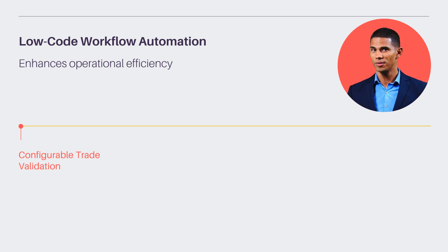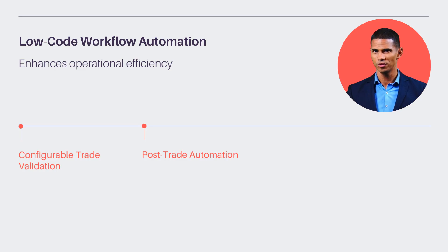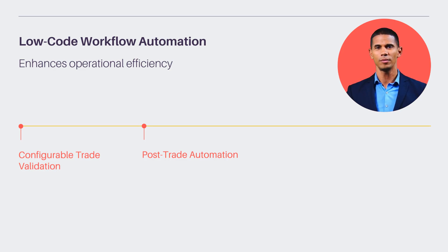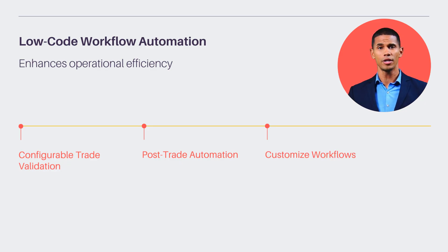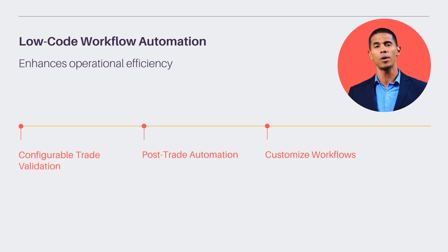Low-code workflow automation enhances operational efficiency with configurable trade validation and approval workflows. It enables post-trade automation using user-defined expressions, ensuring streamlined processes. This feature empowers users to customize workflows, reducing manual intervention and increasing accuracy in trade operations.